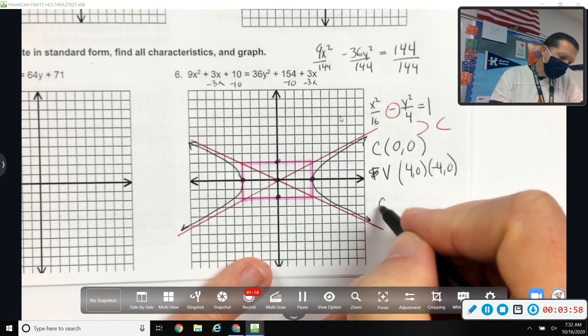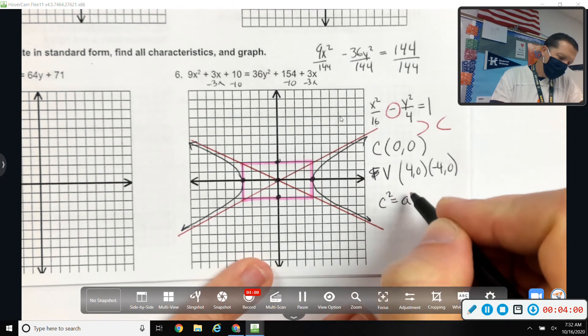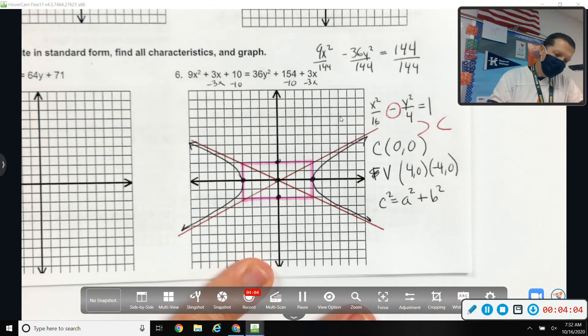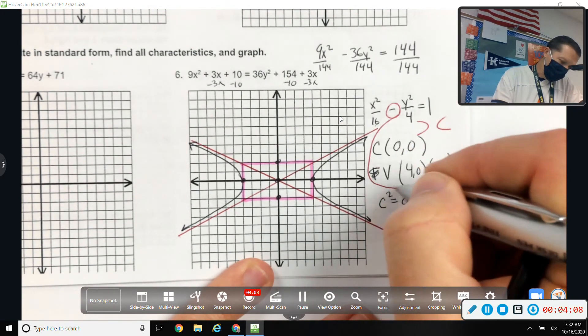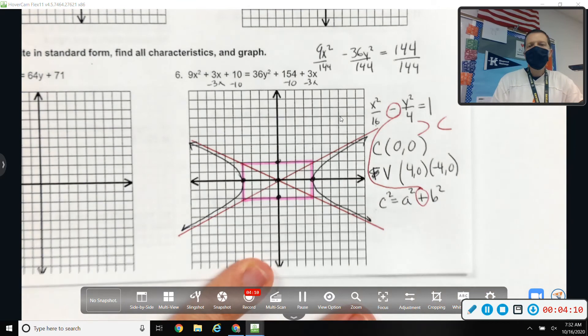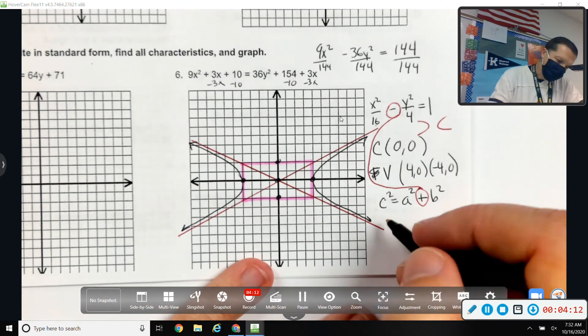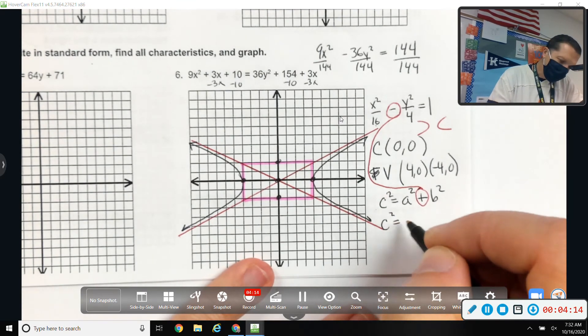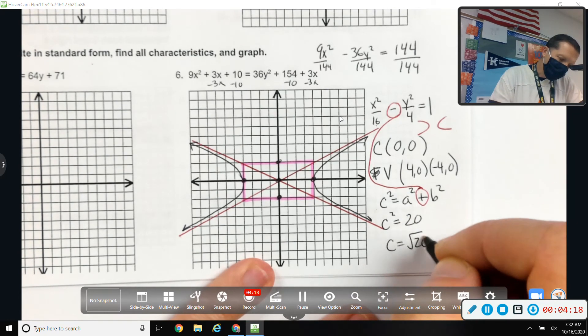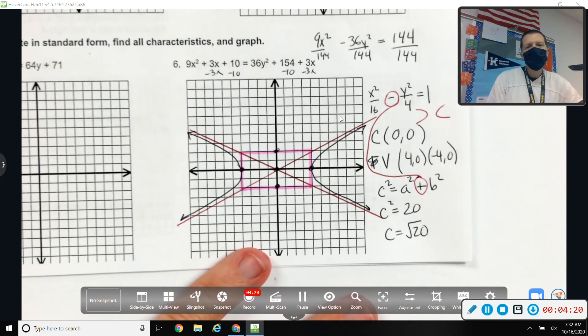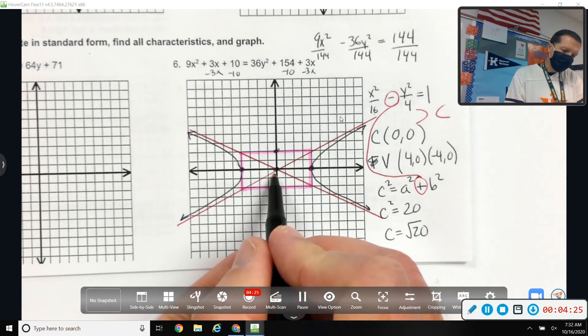To find the focus, I need to figure out what c is. c squared plus b squared. Because if the original sign is minus, then the focus is plus. So, c squared equals 20. So, the square root of 20. And then that's how far from the center, not from the vertex, but from the center I'll go.